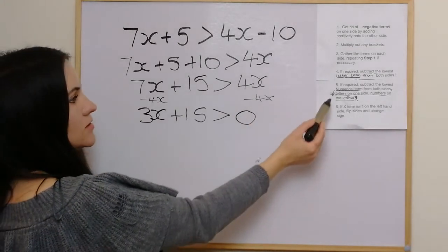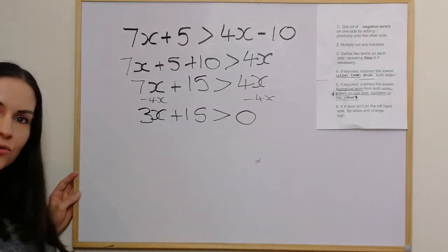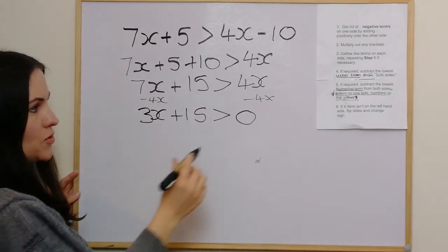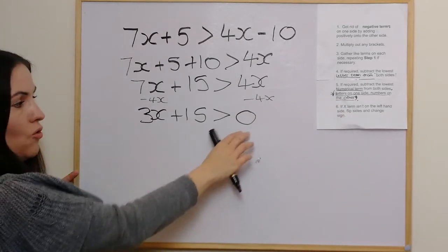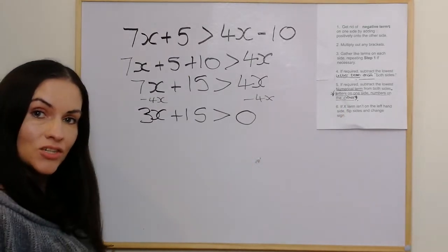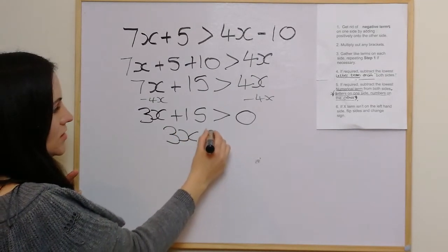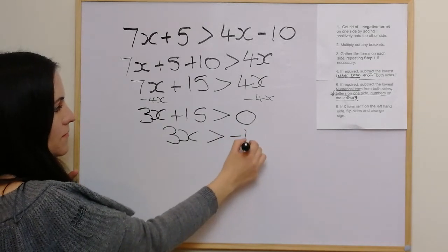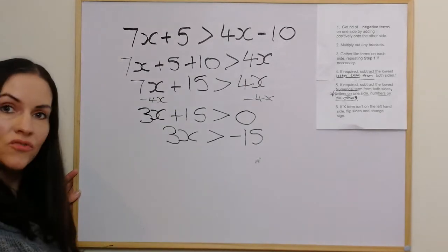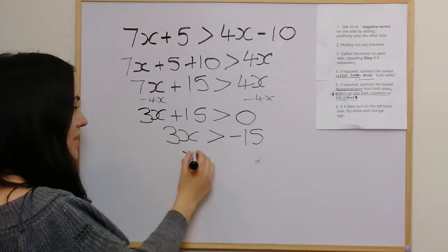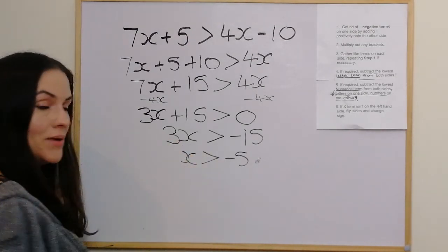We want to have letters on one side and numbers on the other, so we take the 15 over to the other side — it becomes negative when it goes over. So this is the first we've really had to worry about negatives. The x is on the left hand side, so we can just solve: x is greater than negative 5, because we've just divided by 3.